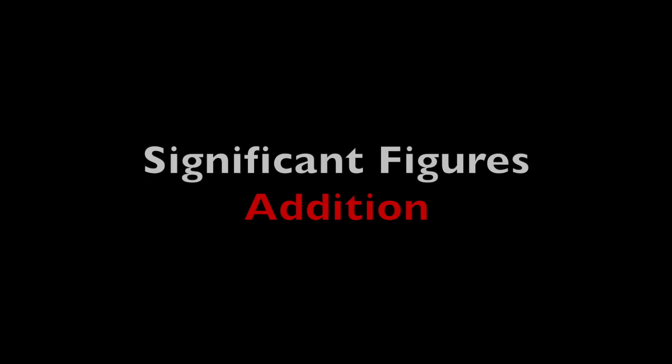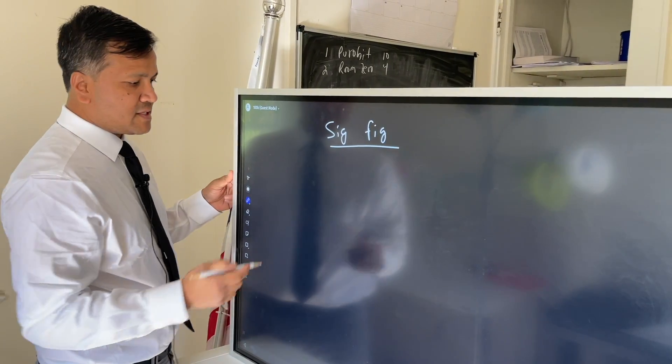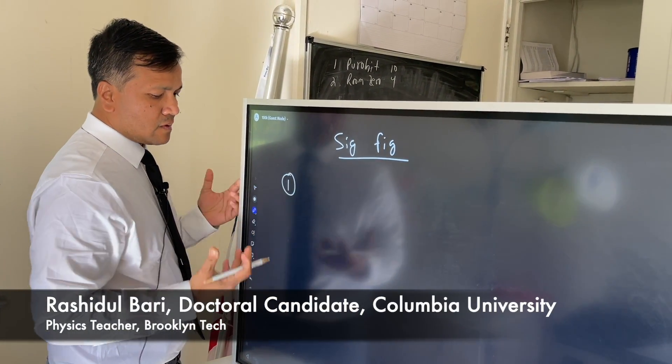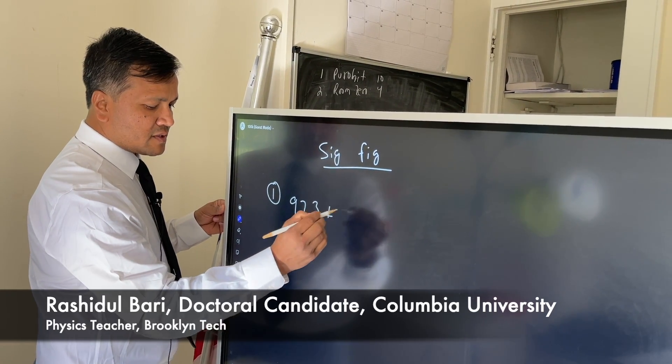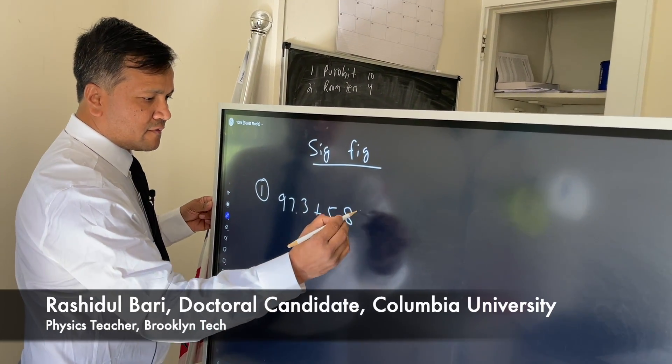Significant figures are reliable numbers coming from measurement. Let's say we have 97.3 plus 5.85 plus 15. Now we have to follow some rules: which one has the least precise measurement?